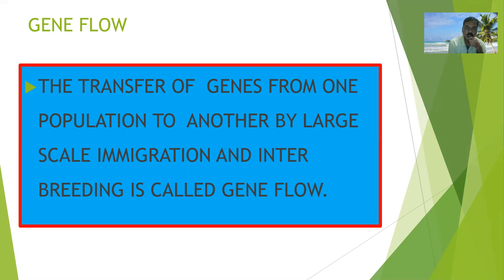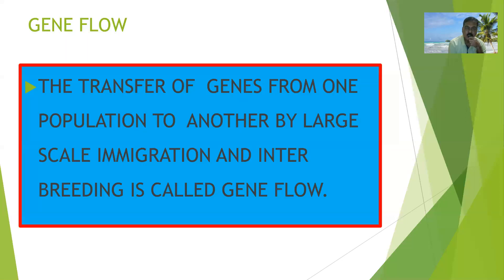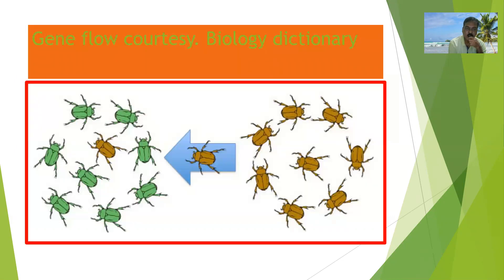The transfer of genes from one population to another by large-scale immigration and interbreeding is called gene flow. Here you can see there are two types of populations — one beetle population and another. Here one of the beetles escaped and migrated into the other population, where it interacts and has interbreeding, making a local population with different genetic variability.